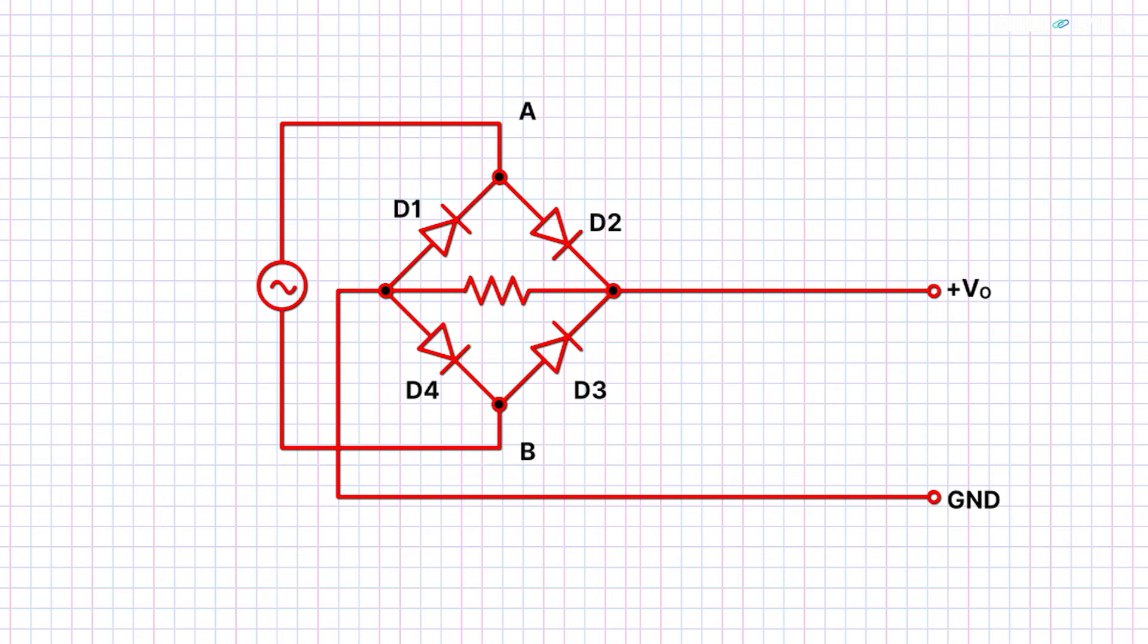Let's name the diodes as D1, D2, D3, and D4. Now, when the positive half of the cycle is passed through the circuit, point A being at a higher potential than point B, the current flows from point A to diode D2 and then to diode D4 as the two diodes are forward-biased. Diode D1 and D3 are reverse-biased and act as open switches, allowing no current to pass through them.